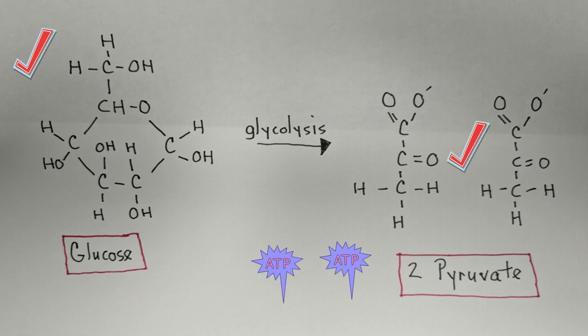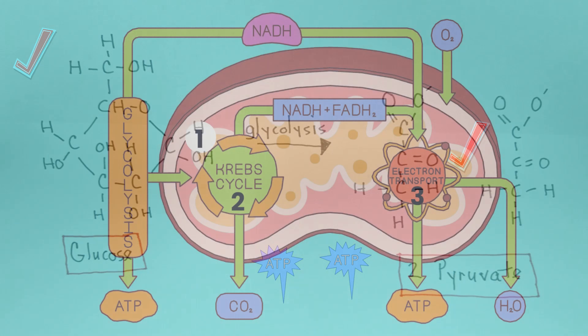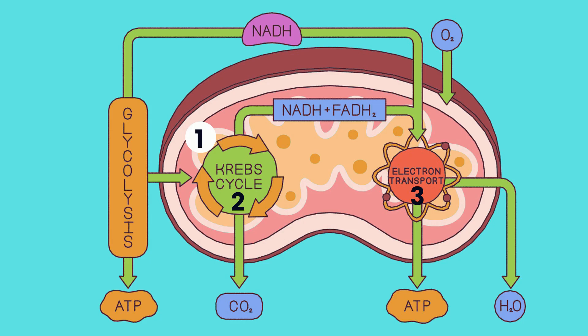Now things move into the mitochondria, where the real energy-making begins. There are three major steps that happen here.